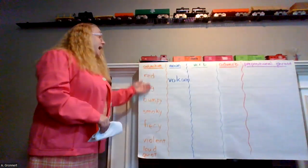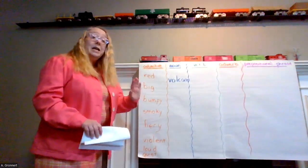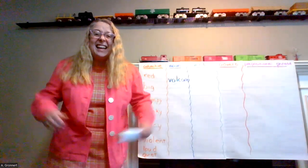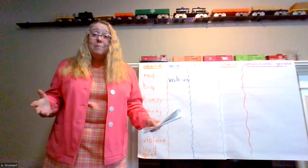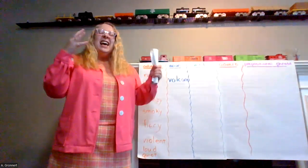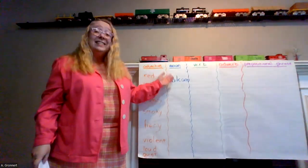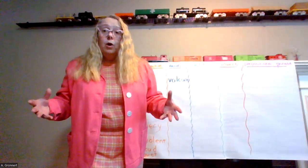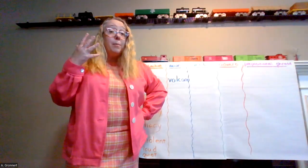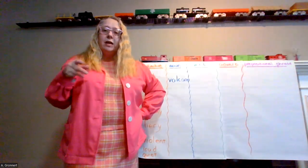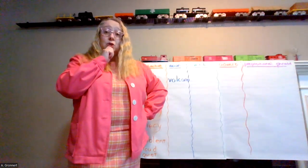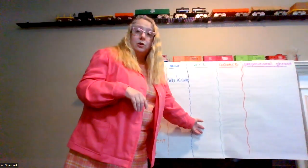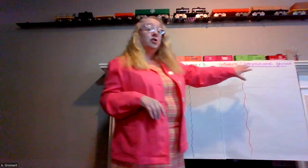Once I finish adding in the adjectives, we next go to verbs. A verb is an action — it tells what the volcano does. Think about the books that we've read and all the things we've been learning. What do volcanoes do? We then fill in this section of the chart, and we do the same thing for prepositional phrases.